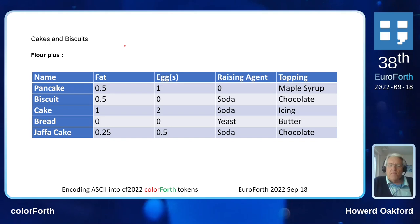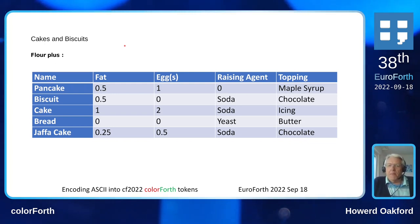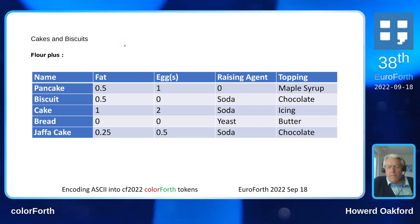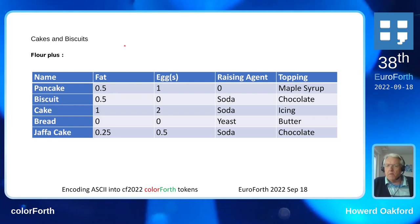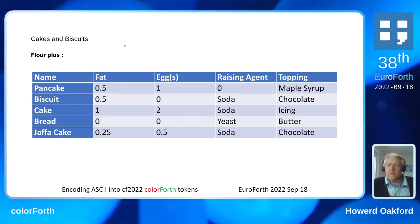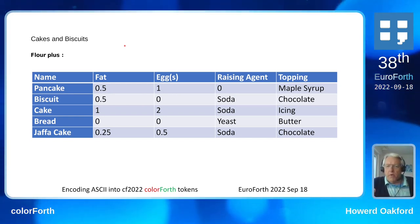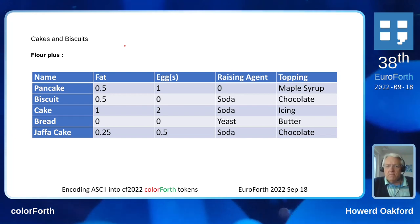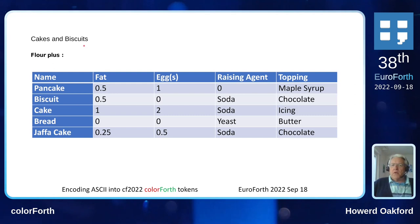For one unit of flour, you put in half a unit of fat, one egg, no raising agents, and you get a pancake. If you put in half a unit of fat, no eggs, and some bicarbonate of soda, you get a biscuit. Cake and so on — it's more fat, more eggs. Bread: no fat, no eggs, yeast, et cetera. So they're all the same sort of thing.